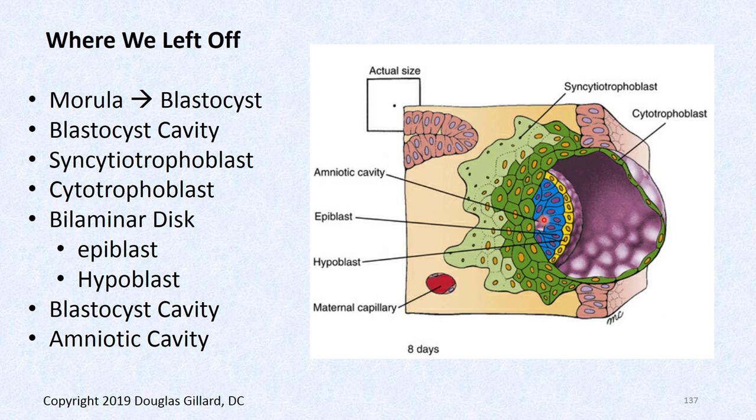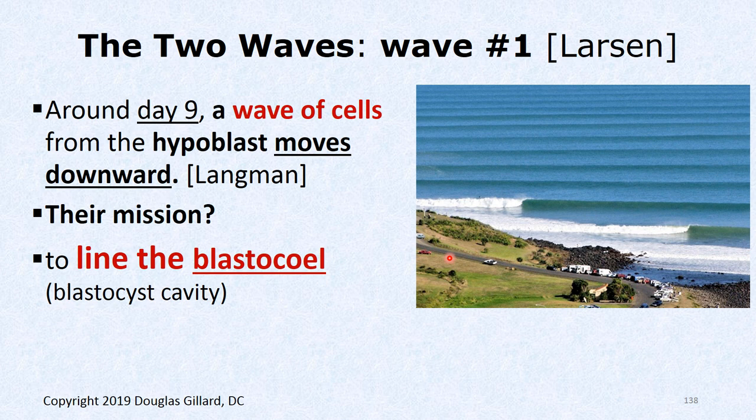That's about where we are. We also talked about the blood vessels. Now at about day nine, getting close to the end of week two, the hypoblast creates two different cell lines. They literally migrate around the primary yolk sac — that's the first wave — and eventually line the primary yolk sac, also known as the blastocele.